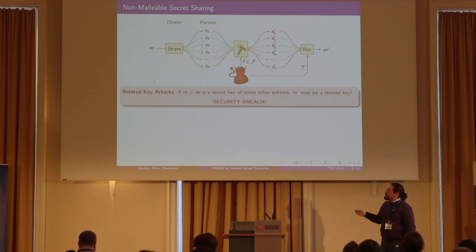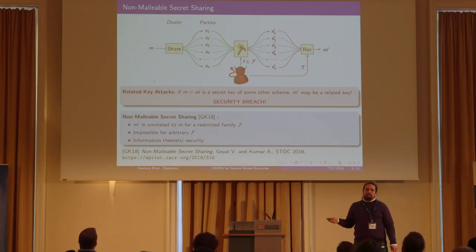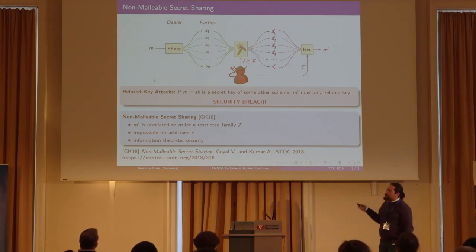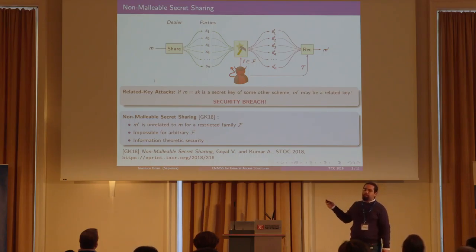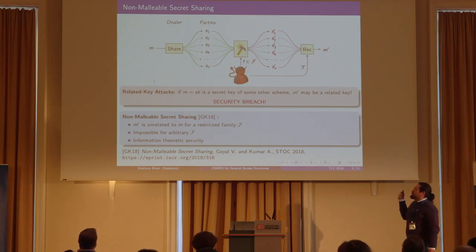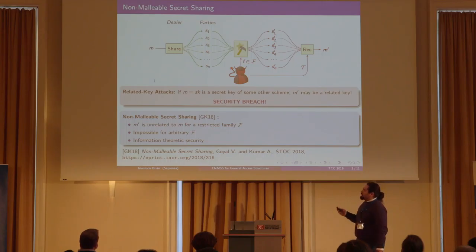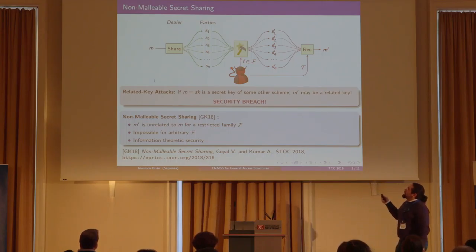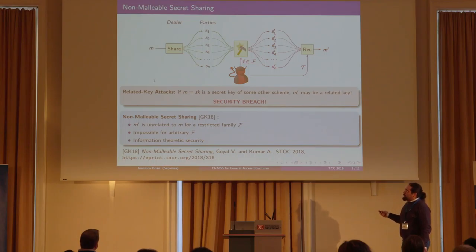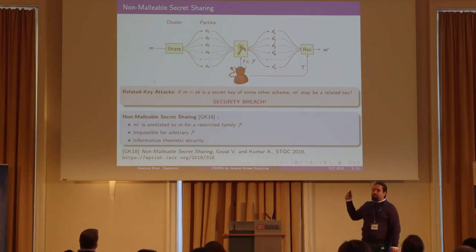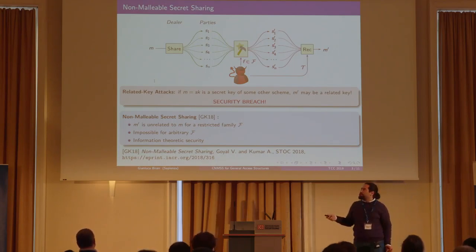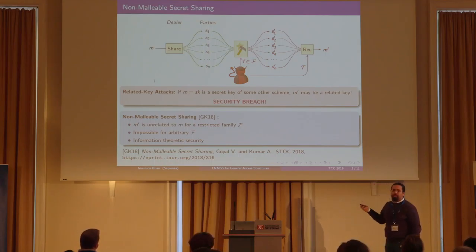To overcome this problem, Goyal and Kumar in 2018 came up with the notion of non-malleable secret sharing, which informally states that the scheme remains secure even if the attacker is allowed to tamper once. In particular, they achieve information-theoretic security and give a definition in which the resulting message M' is either the original message or completely unrelated. They also state that this is impossible to achieve for arbitrary function families, and so they find a scheme initially for independent tampering.